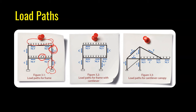For a frame with a cantilever portion, the same principles apply. Load from the column is transferred to the cantilever, which carries a uniformly distributed load as well as load from the column above. Moment and shear are transferred from the beam to the column, which carries compressive load, and finally everything is transferred to the foundation.